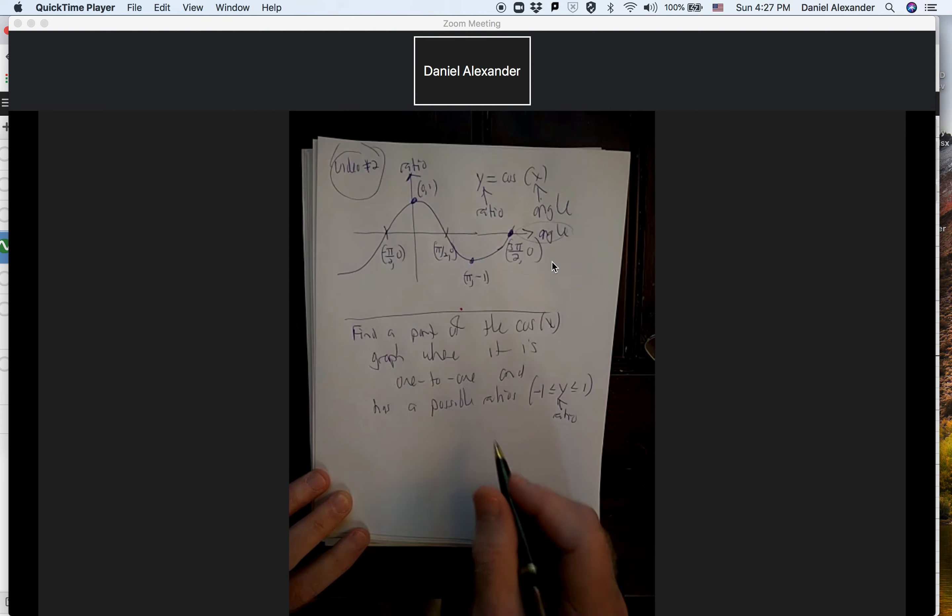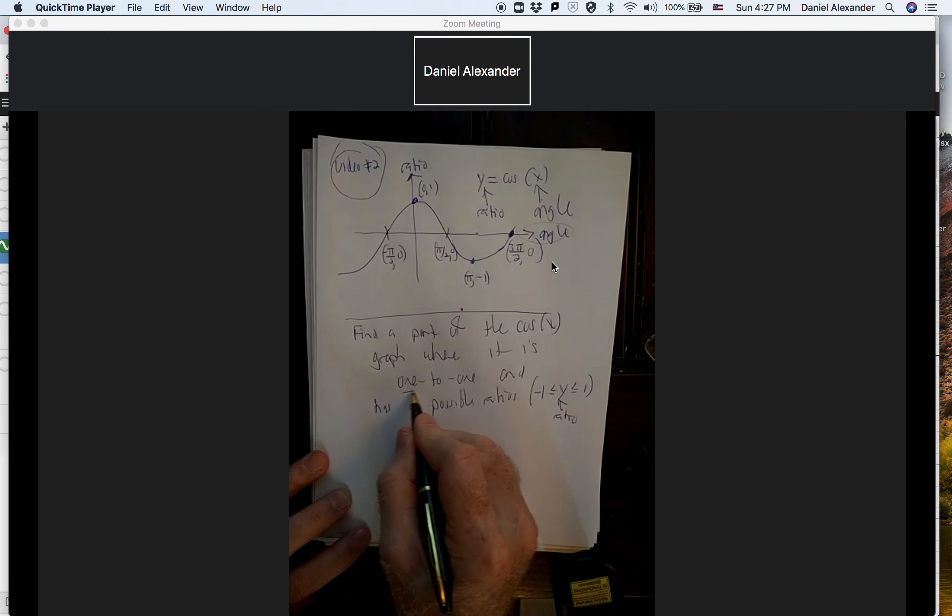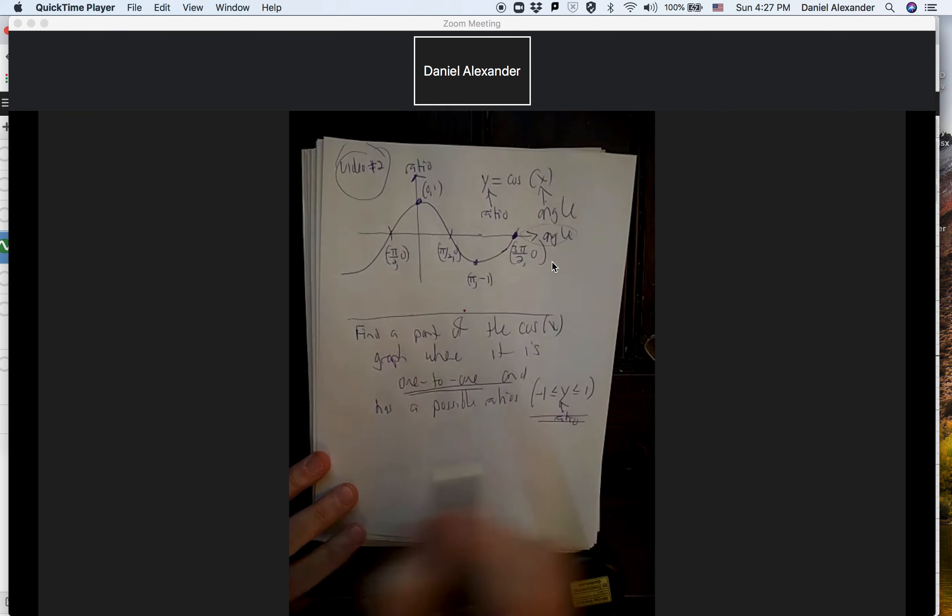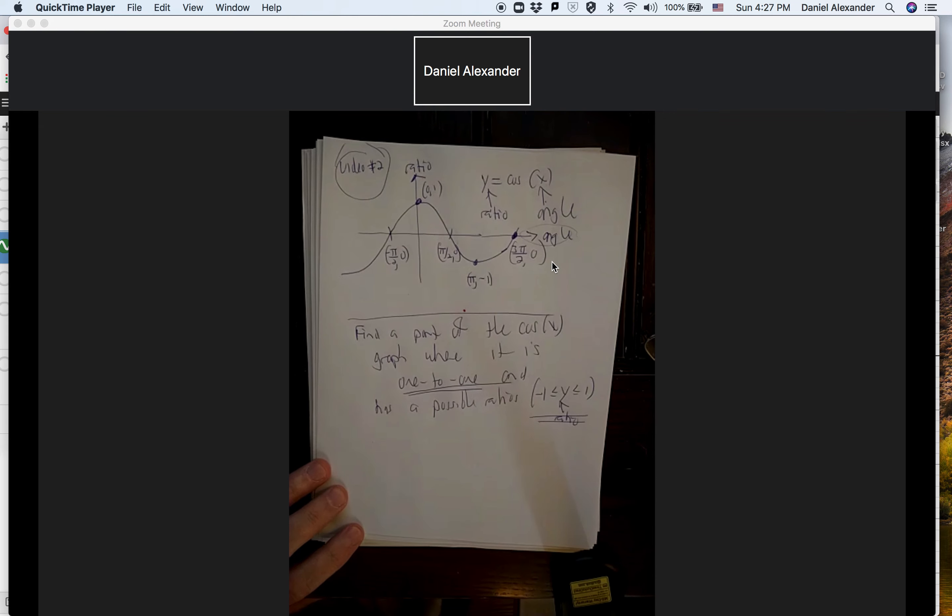So we want to find a part of the graph where the cosine is one-to-one and where all possible ratios between minus one and one is. I want you to think about that. Maybe pause it and just sketch out what you think is the part of the cosine curve I'm going to pick. Sometimes they call that the principal part of the cosine.